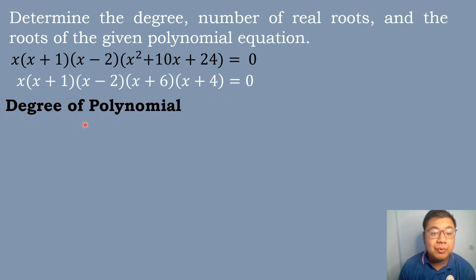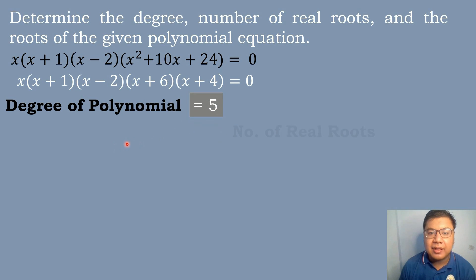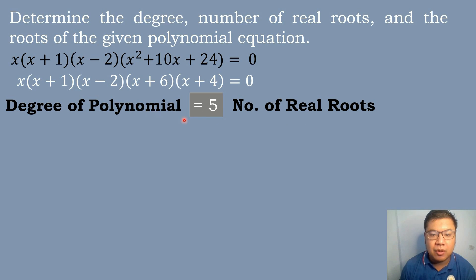We get the degree of the polynomial by multiplying all variables: x times x is x squared, x squared times x is x to the third power, x to the third power times x is x to the fourth power, and x to the fourth power times x is x to the fifth power. So the degree of polynomial is 5, and the number of real roots is also 5.